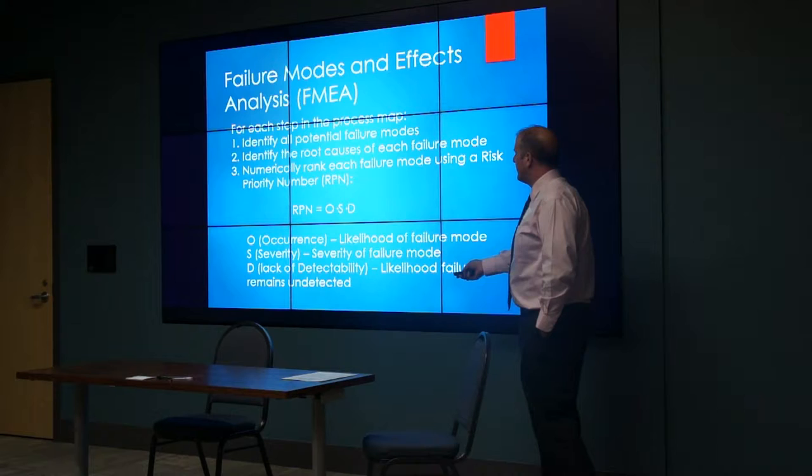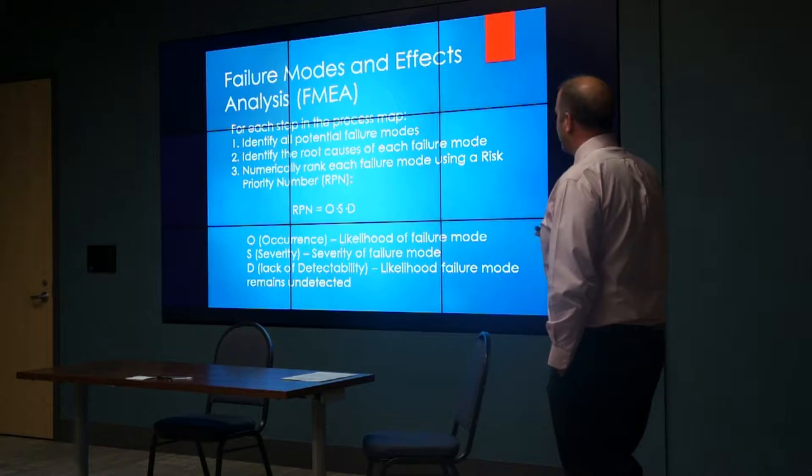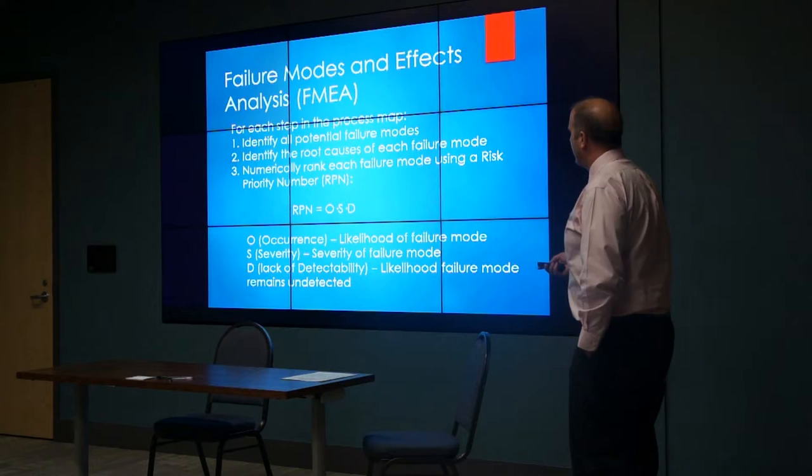The risk is proportional to the product of all three of these numbers. These numbers are given a scale from 1 to 10, so the maximum RPN would be 1,000 and the minimum would be 1. Typically, numbers less than 100 are usually ignored—risks not significant enough to pay attention to. The ones higher than that are the ones you really need to address in your quality management program to make sure you prevent those risks.